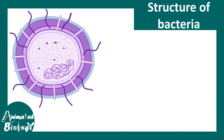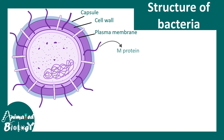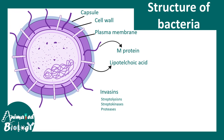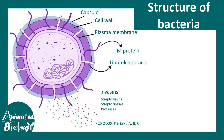Now let's talk about the structure of the bacteria to appreciate its function and pathogenicity. Looking at one unit of streptococcus, it is a round-shaped bacteria with a capsule on the outermost side, then a cell wall, and a plasma membrane. Most importantly, there is M-protein which is important for virulence. Lipoteichoic acid and invasins are also common in these bacteria. Invasins like streptolysins, streptokinases, and proteases are responsible for the pathogenicity.